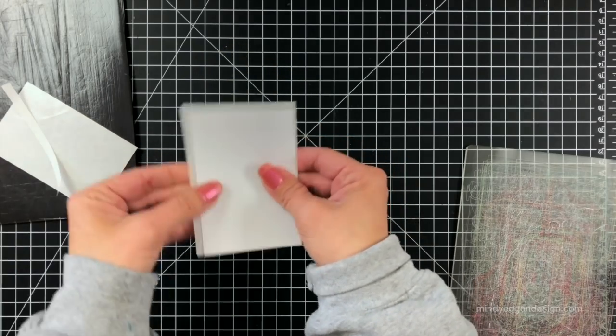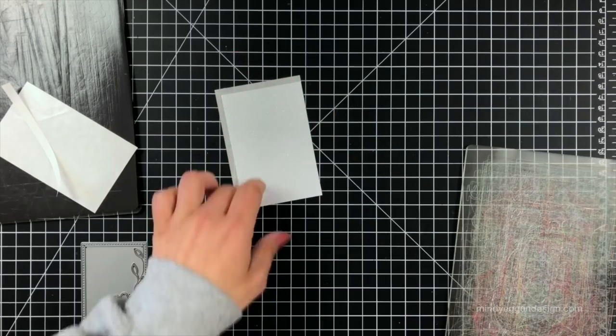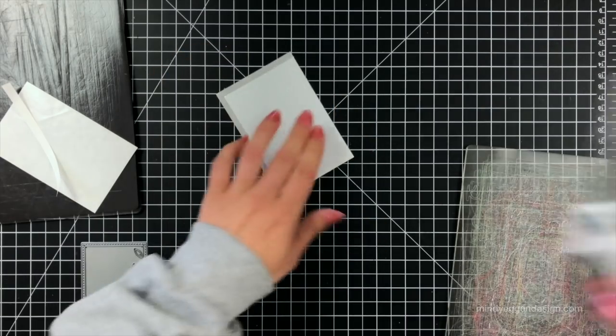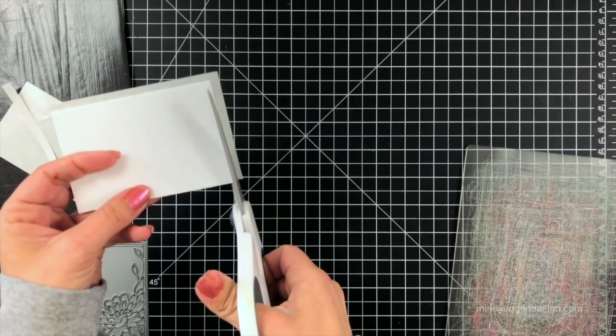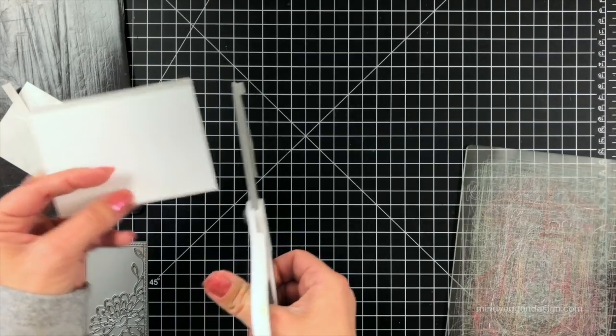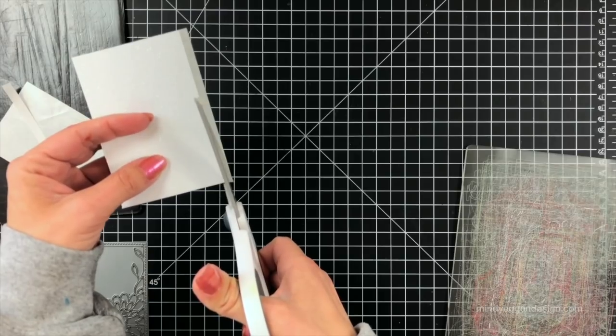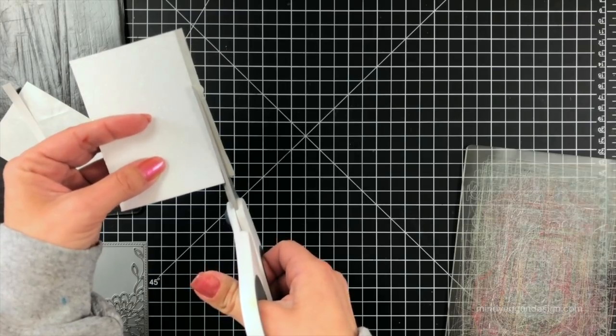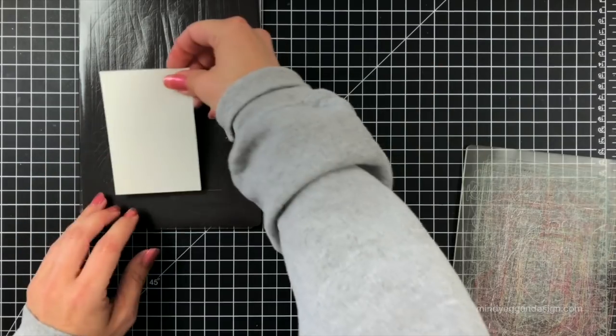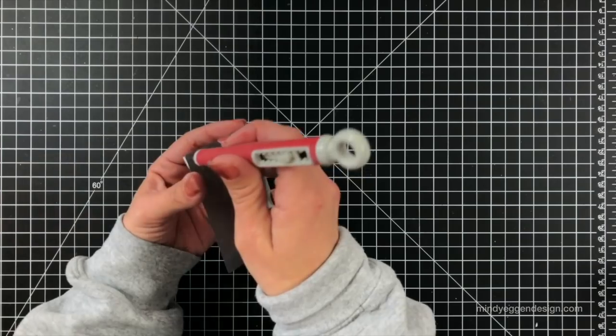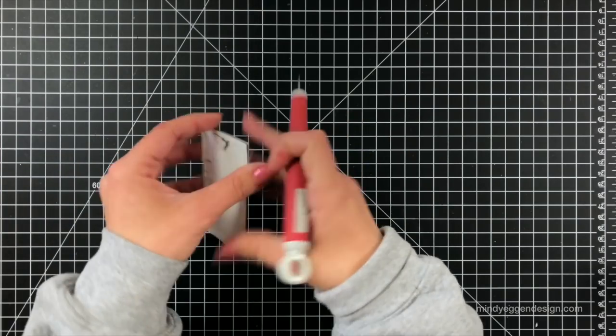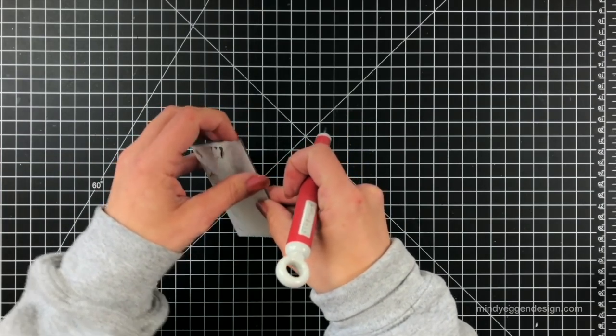So I'm going to give this a really nice good push down, make sure that my stick-it is stuck everywhere I need it to be and then I'm going to just trim off those excess edges. And then I can get ready to die cut so I will be using my Gemini Junior. This is such a phenomenal machine for die cutting especially intricate dies like this. You can use whatever die cutting machine you have. This is just one that I have really been loving lately.